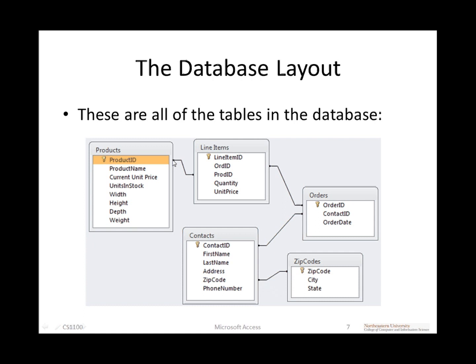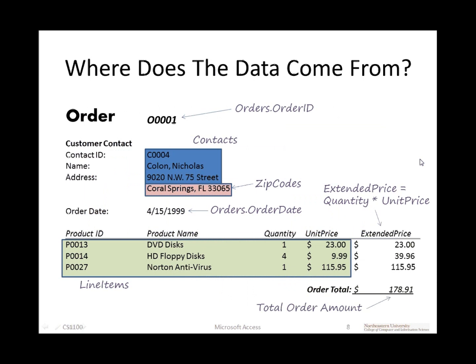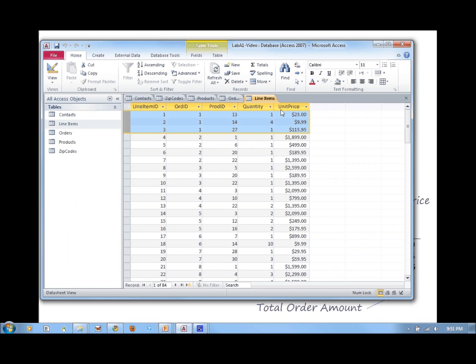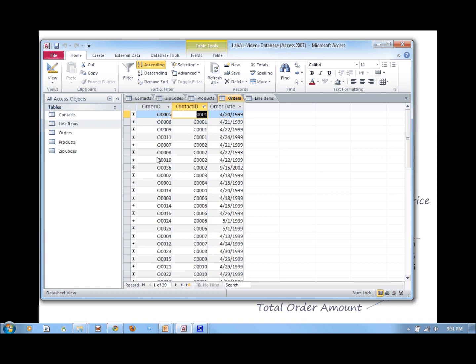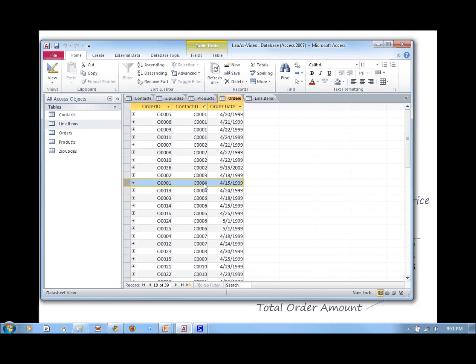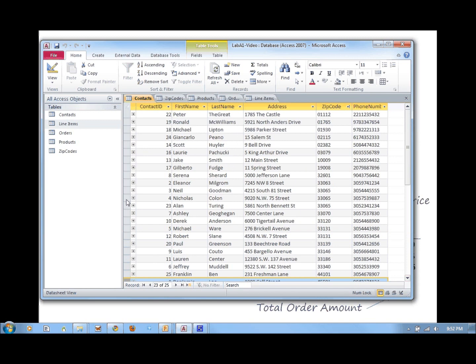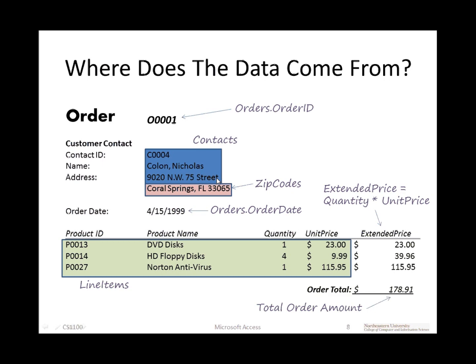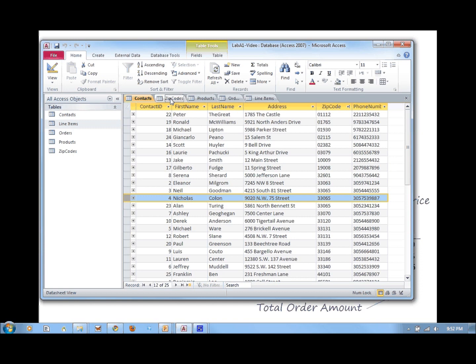Looking back at the original order #1, the order number comes from orders.orderID. Order #1 is for customer C004, placed on 4/15/1999. To find out who C004 is, we go to the contacts table — C004 is Nicholas Colon, living at 9020 Northwest 75th Street, zip code 33065. Going to the zip codes table, 33065 is Coral Springs, Florida.